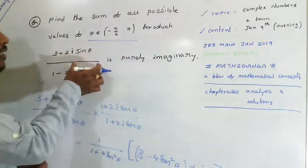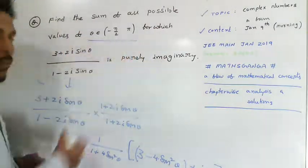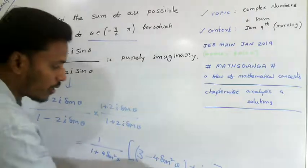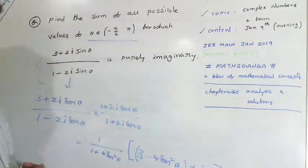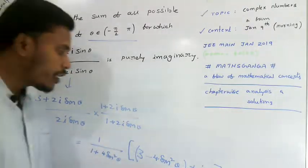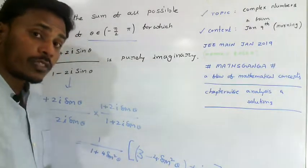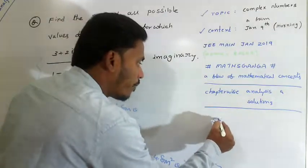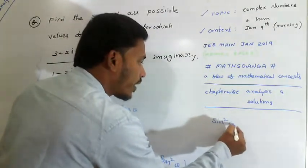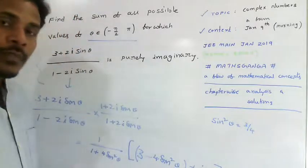Since the expression is purely imaginary, the real part must equal zero. So 3 - 4sin²θ = 0, from which we get sin²θ = 3/4.